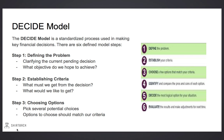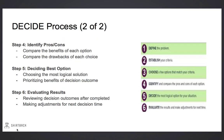Step 3 is Choosing Options — we need to pick several potential choices for the decision we must make, and the options should match our criteria. Step 4 is Identifying the Pros and Cons of each decision: what are the benefits and what are the drawbacks? Step 5 is Deciding the Best Option — we should choose the most logical solution to our problem and prioritize the benefits of the outcome.